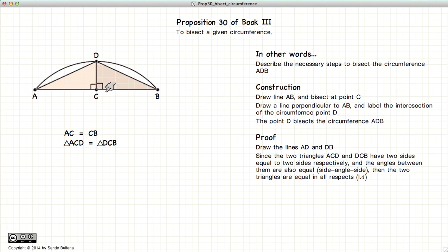Now AC is equal to CB because we constructed it that way. CD is common, and these two angles are right angles. So within these two triangles we have side, angle, side is equal to side, angle, side. So by Proposition 4 of Book 1, these two triangles are equal in all respects.